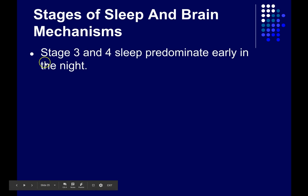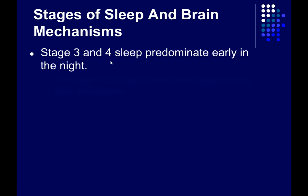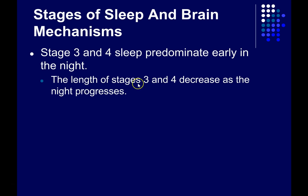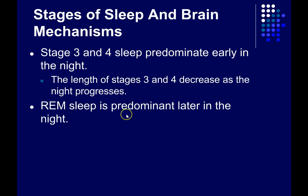Early on in the night, we spend more time in stages 3 and 4 sleep — those stages tend to be longer early on. The length of stages 3 and 4 decreases as the night progresses. We still continue to progress through all the stages every 90 minutes; it's just the duration of those stages that tends to decrease. Towards the end of the night, we may spend little to no time in stages 3 and 4. Instead, REM sleep predominates later in the night, and the duration of the REM cycles tends to increase.